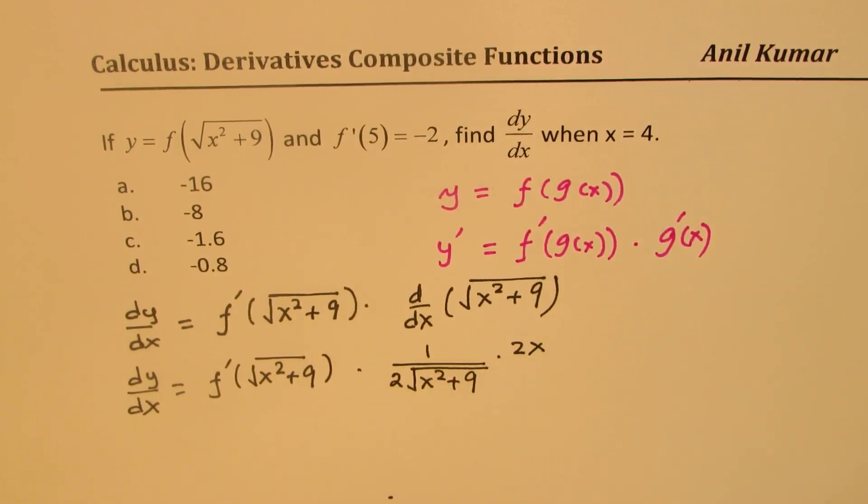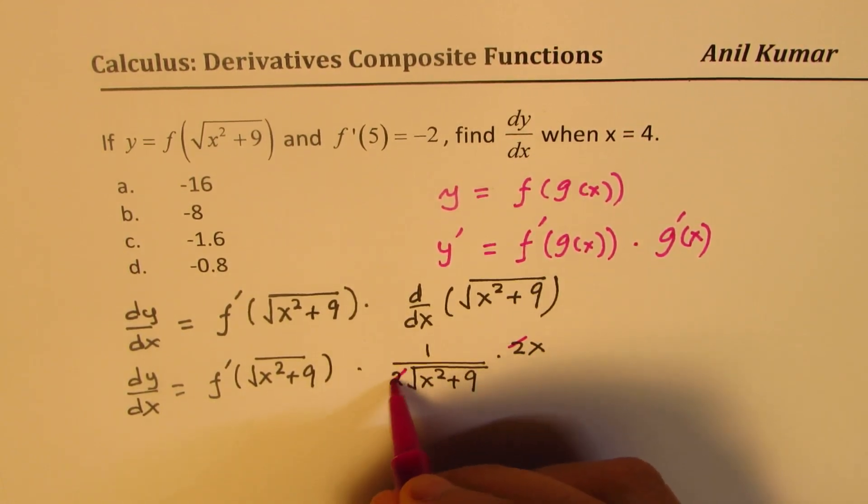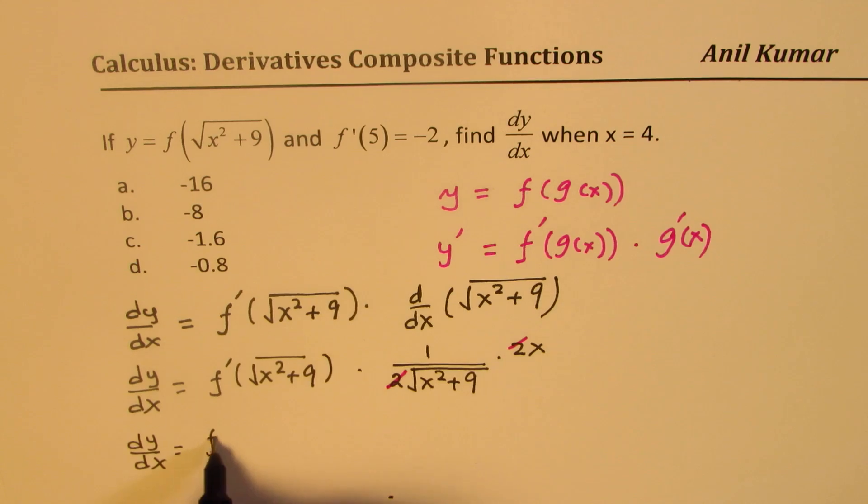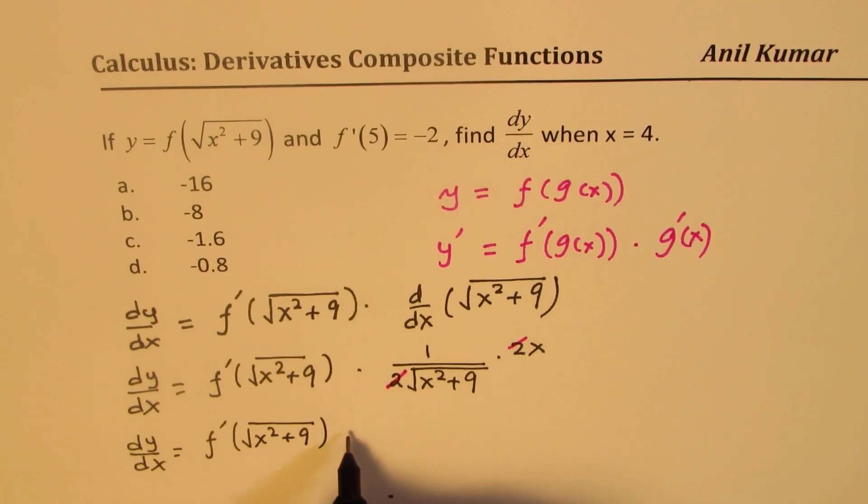So this can be simplified. And you get this expression. So you get dy dx equals f prime square root of x squared plus 9 times x over square root of x squared plus 9.